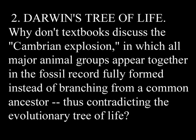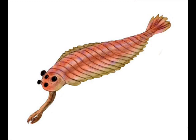Question 2: Darwin's Tree of Life. Why don't textbooks discuss the Cambrian Explosion, in which all major animal groups appeared together in the fossil record, fully formed, instead of branching from a common ancestor, thus contradicting the evolutionary Tree of Life? Darwin himself said it could be a brick wall to his theory of evolution, but now we know a lot more about it. For example, the so-called explosion lasted 70 to 80 million years — that is a long time for reproducing life forms. 70 to 80 million years is nothing in geological time, but it's forever to pretty much anything that were to evolve.